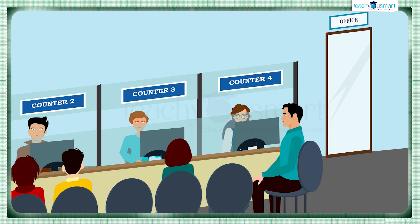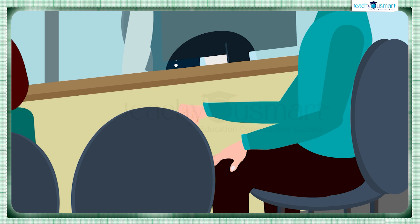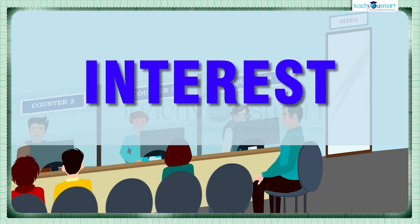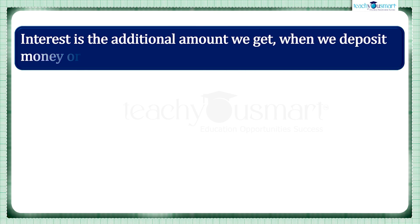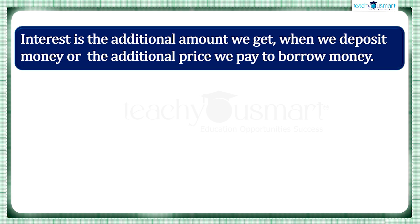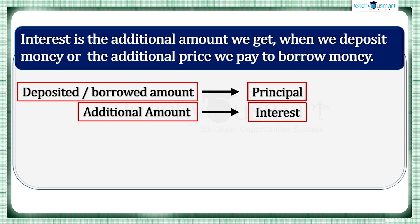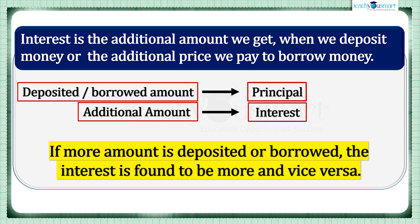We know that when we deposit some money in a bank, we get an additional amount for that. Also, if we borrow some money, then we have to pay an additional price. The additional amount that we get or pay is called interest. Interest is the additional amount we get when we deposit money, or the additional price we pay to borrow money. We call the deposited or borrowed amount as principal and the additional amount as interest. If more amount is deposited or borrowed, the interest is found to be more, and vice versa.